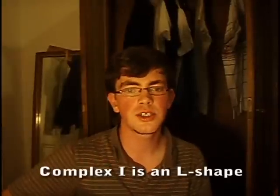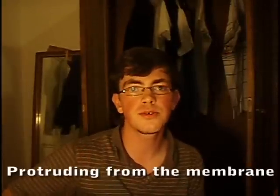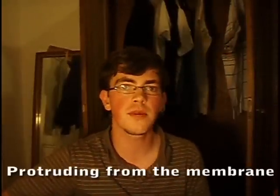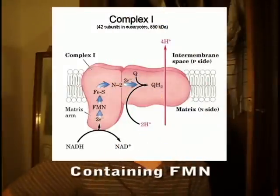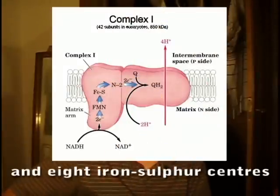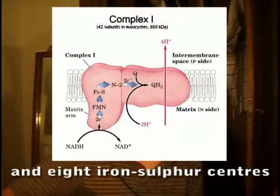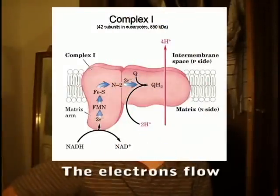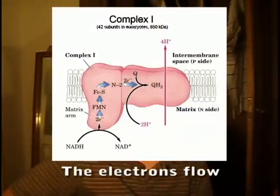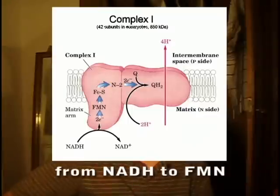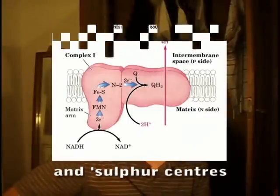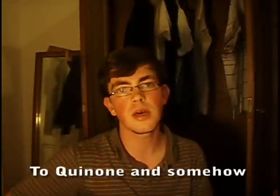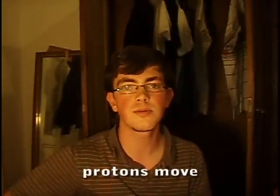Complex 1 is L-shaped, protruding from the membrane, containing FMN, iron-sulfur centers (N), and hi-potential iron-sulfur clusters. The electrons flow from NADH to FMN and iron-sulfur centers. A quick note: somehow protons are pumped in this process.